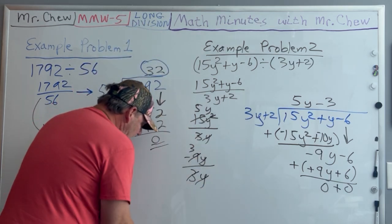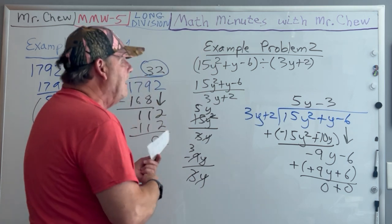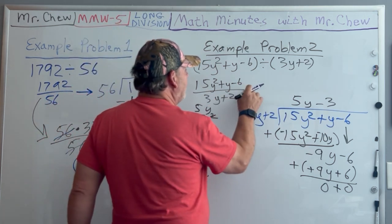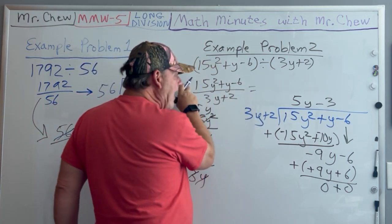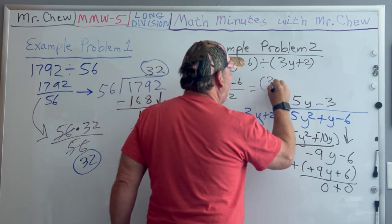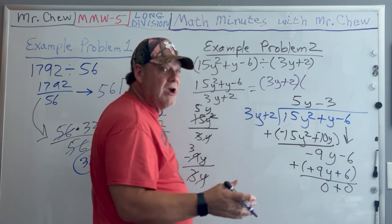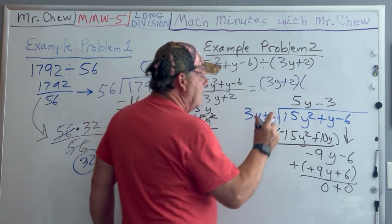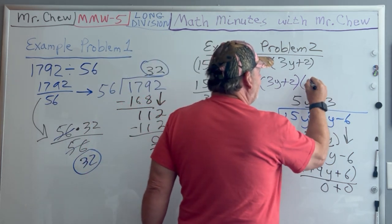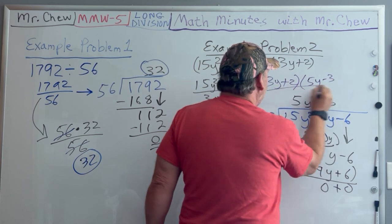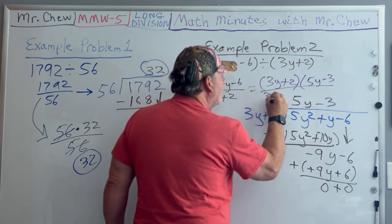One other thing: I could take and factor this. If I factor this, I'm going to get 3y + 2—I do have videos on factoring, you can subscribe to my YouTube channel—it's gonna be (3y + 2)(5y - 3).